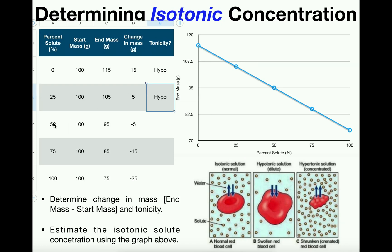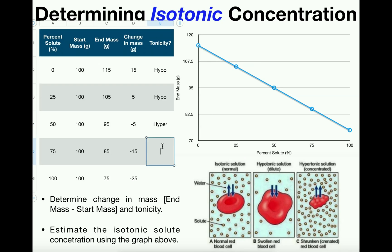For the 50 percent, 75 percent, and 100 percent solutions, the change in mass is negative — the start mass of 100 drops to 95, 85, or 75. In order for that to happen, water has to be leaving the egg. The only way water can leave the cell is for it to be in a hypertonic solution, so I'll put hyper for all three of these.